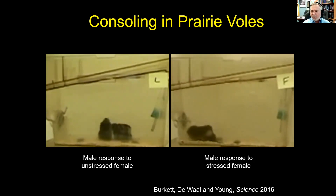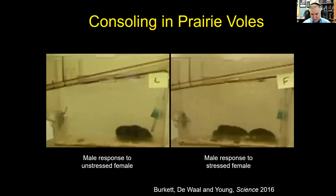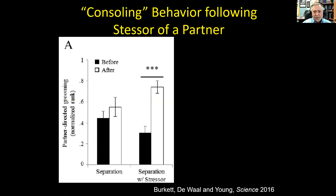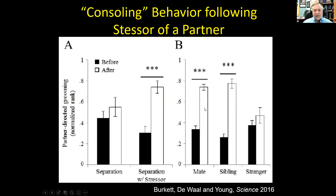His glucocorticoid — corticosterone — levels match hers: if she's really stressed, he has a higher level too. That's a feature of empathy. Quantified data shows that mates do it to each other, siblings will do it to each other, but they won't do it to a stranger. There's a familiarity bias — if it's an individual they know, they will show consoling behavior, even if it's an unrelated individual they've lived together with.